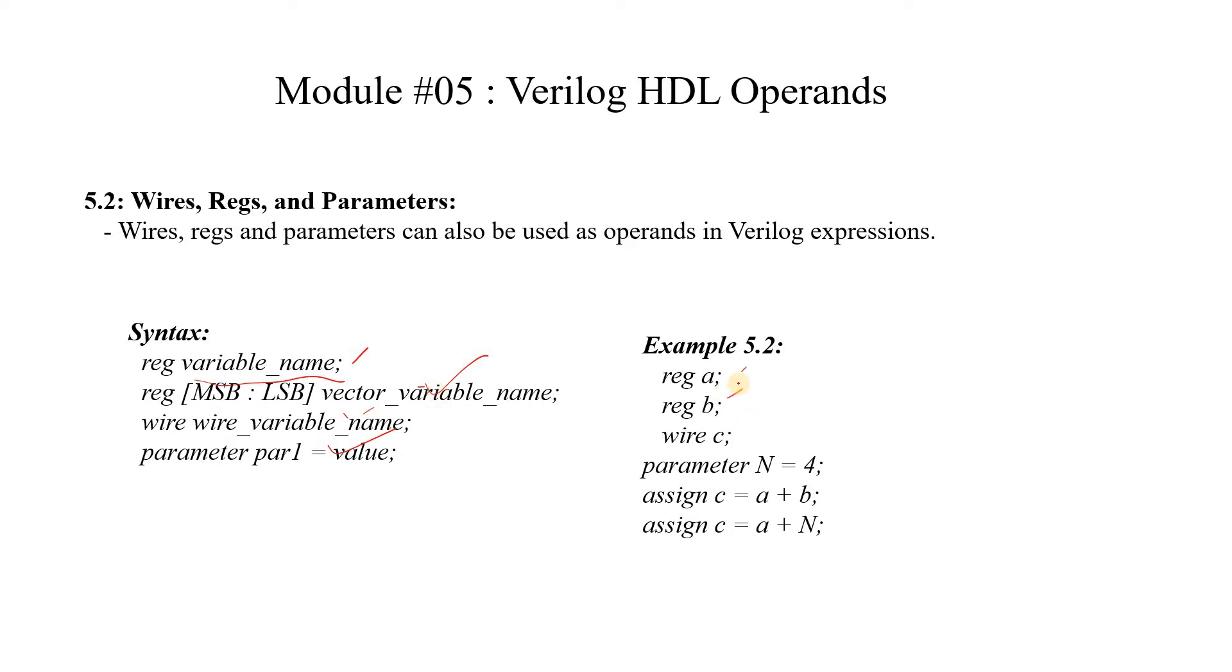So a, b and c are operands of type register and c is type of wire. We can also have a parameter type of operand which is n. Operands are the entity on which the operation has to be performed. If you take an example assign c equal to a plus b, here a and b are operands of type register.